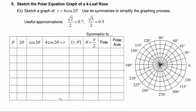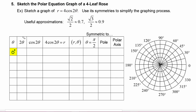Let's get started. We begin with theta equals zero degrees. Now the argument of the cosine function is two theta, so any angle we input, the first thing we have to do is double it. Doubling zero degrees we still have zero degrees. The cosine of zero degrees is one, so to calculate r we take four times one, which is four. So we will plot the polar point (4, 0°).